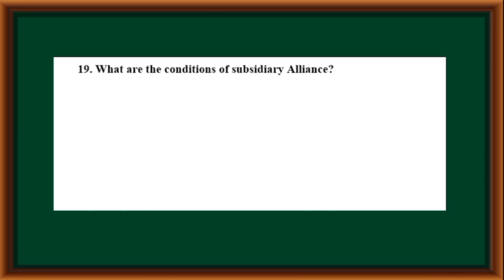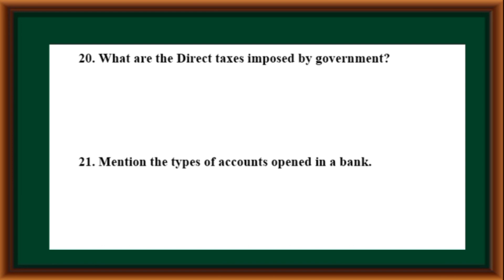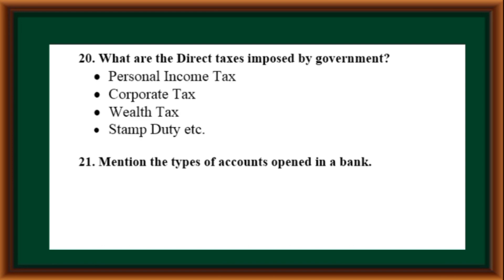What are the conditions of the Subsidiary Alliance? The Indian kings had to keep the British army in their kingdom; the state had to bear the expenses of the army and wages of soldiers; the king had to have a British resident in his court; the king could not appoint any other European; for any agreement with any Indian state, the permission of the Governor General was mandatory; the company would offer protection to the state from internal or external aggression.